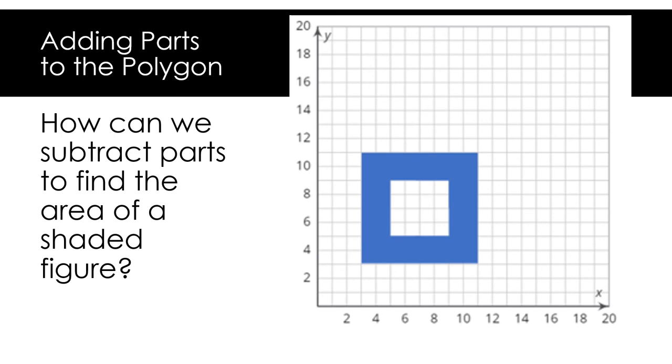Now that we know that the area of the blue shape and the white square in the center is 64 units squared, we will need to find the area of the white square in the center to subtract that part to find the area of the blue shape. The square has a side length of 4 units, so the area is 16 square units. Since we know that the area of the combined shapes is 64 units squared, we can subtract 16 units squared to get the area of the blue shape. The area of the blue shape is 48 units squared. Now you know how to find the area of polygons by subtracting parts.